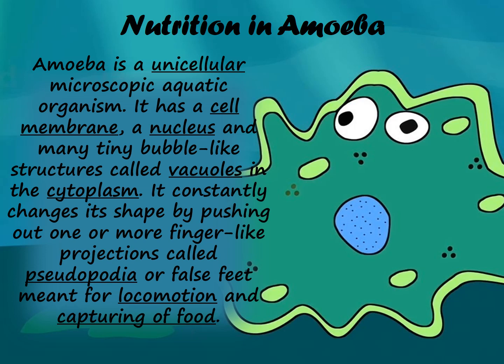You must be wondering how it does that? Let me explain. But let's learn about its structure first. Amoeba has a cell membrane around its dense nucleus and many tiny bubble-like structures called vacuoles in the cytoplasm. Amoeba keeps changing its position and shape with the help of pseudopodia.